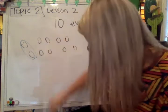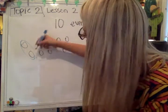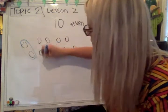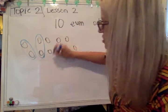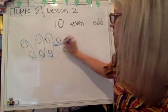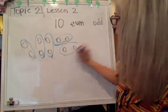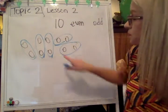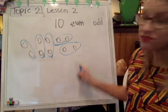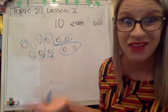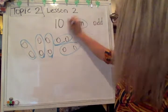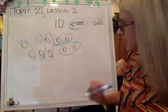My marker does not want to work, but there's one pair, there's another pair of two, another pair of two, another pair of two. I've got five pairs of two. I don't have any leftovers. The number 10 is even.